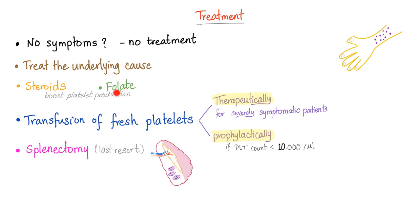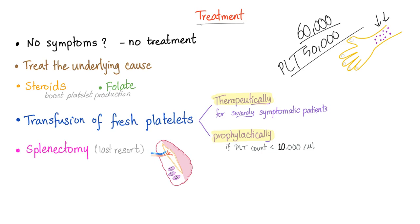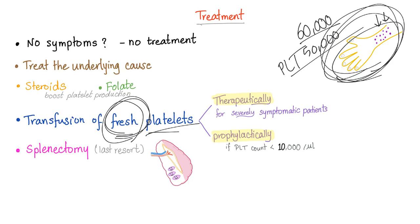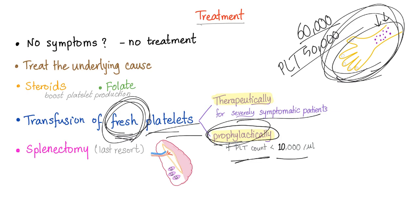Treat the underlying cause. Use steroids and folate to boost platelet production. Transfuse fresh platelets therapeutically for severely symptomatic patients. If a patient has 50,000–60,000 platelets and is only mildly symptomatic with small petechiae, and you transfuse fresh platelets, you're wasting a limited resource. Only use fresh platelets for severely symptomatic patients, or prophylactically if platelet count is less than 10,000, because things are probably going to get very bad soon.